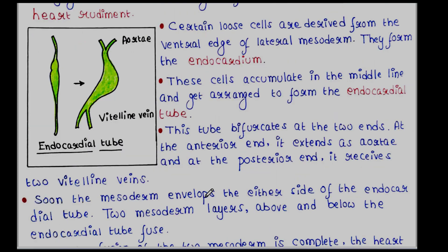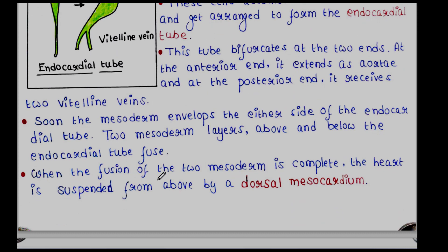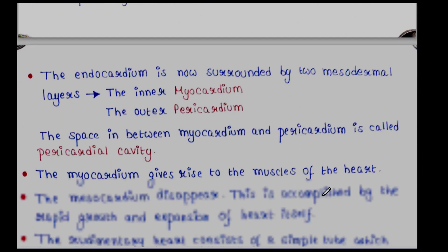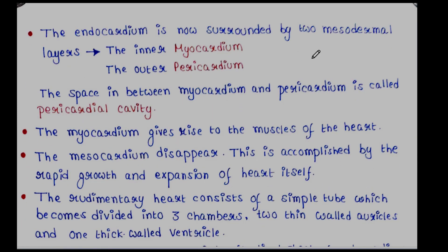Soon the mesoderm envelopes either side of the endocardial tube. Two mesoderm layers above and below the endocardial tube fuse. When the fusion of the two mesoderms is complete, the heart is suspended from above by a dorsal mesocardium. The endocardium is now surrounded by two mesodermal layers: the inner myocardium and the outer pericardium. The space in between myocardium and pericardium is called the pericardial cavity.